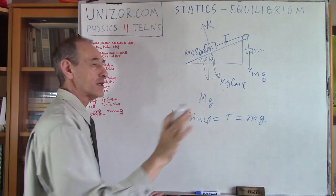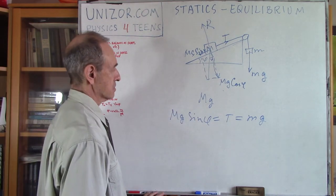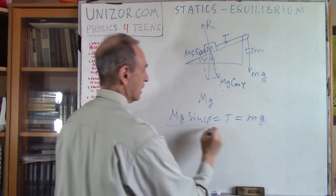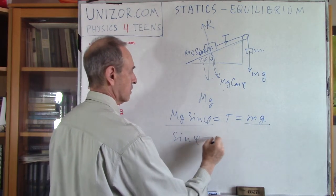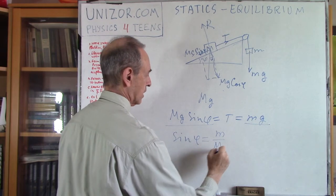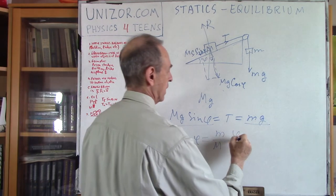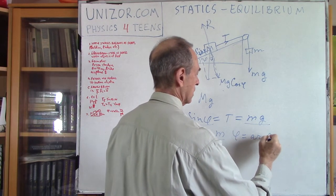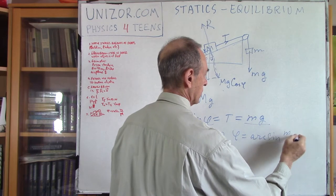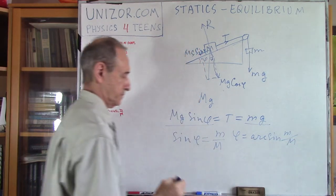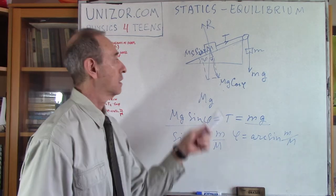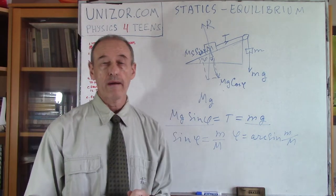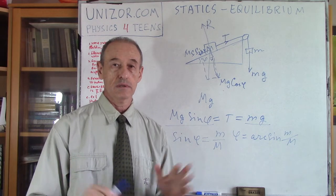Obviously from which we can very easily find sine phi is equal to m over capital M and phi is equal to arcsine m over capital M. That's it, we found the angle where everything is in balance.